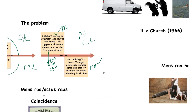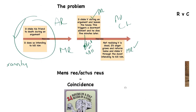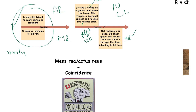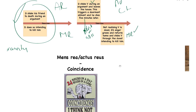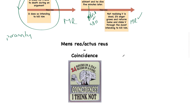So to summarise: when the two don't coincide, if the actus reus occurs before the mens rea, the courts will apply the single continuing act approach. If the mens rea occurs before the actus reus, the courts take the single transaction view. Either way, the defendant is liable even if there is a gap between the mens rea and the actus reus.